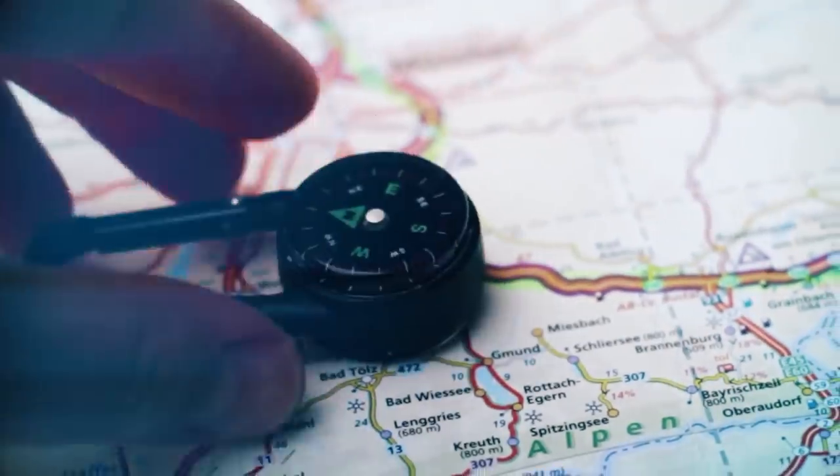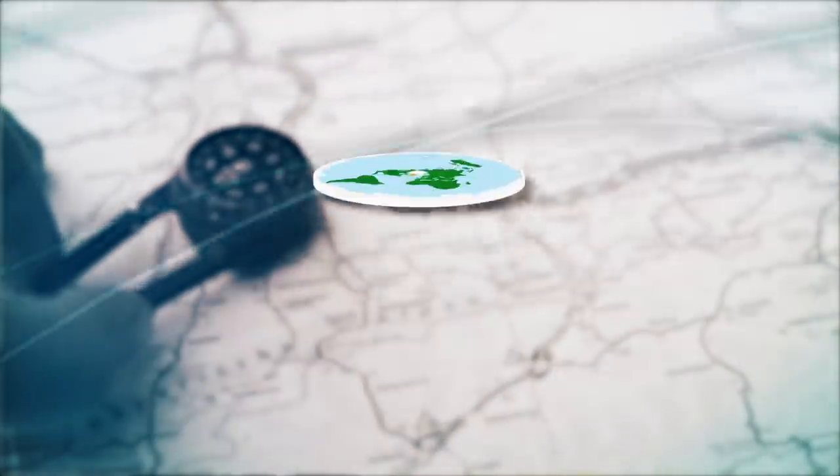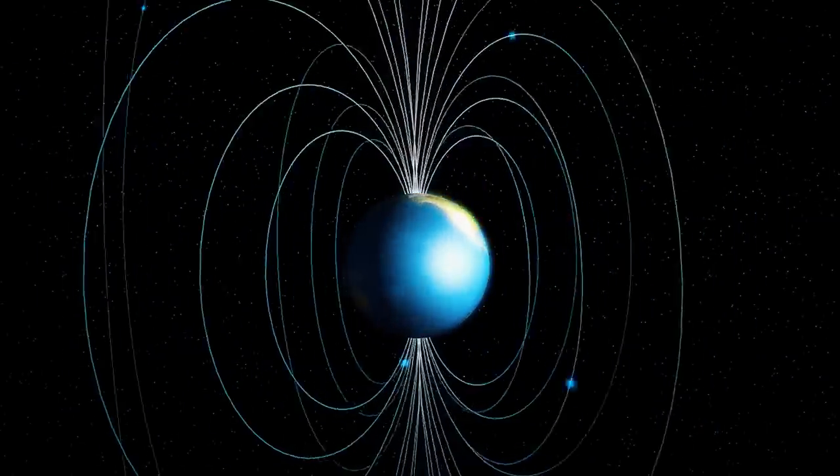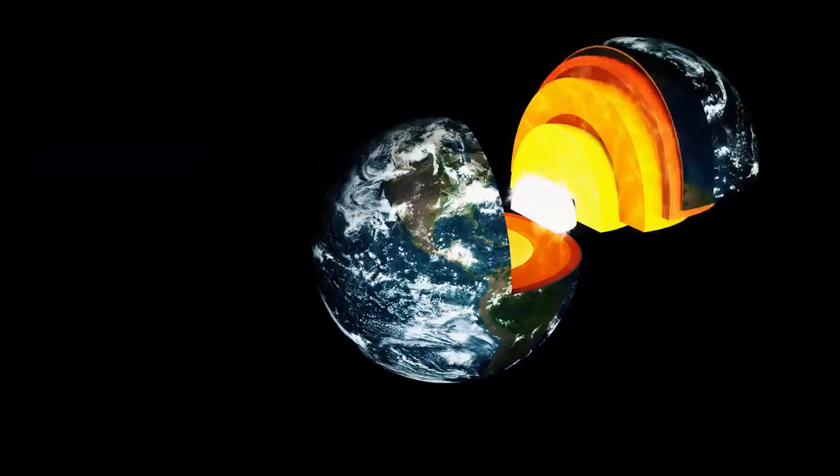Well, no. Compasses work by telling us which way is north, and they rely upon the magnetic field to do this. A Flat Earth would not be capable of generating a magnetic field. Earth's magnetic field, also called its magnetosphere, is created by the movement of superheated liquid metal in the outer core around an inner core of solid iron. This reaction can only exist in a spherical planet, and not having one would be a much bigger problem than you might expect.